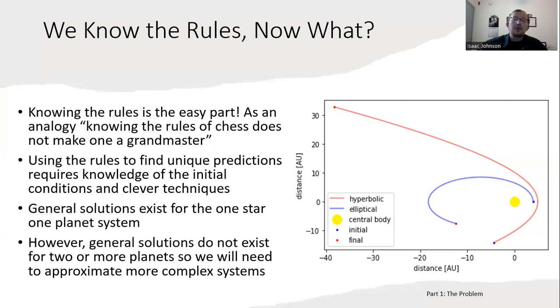Notice that what Newton found and Kepler before him found was that bound orbits for the one star, one planet system are elliptical orbits like in the blue orbit here, and unbound orbits are hyperbola seen in red. Unbound means that the red object isn't coming back—it's going to continue on and never return to this particular star system. However, general solutions do not exist for two or more planets, and so we're going to need to approximate more complex solutions.